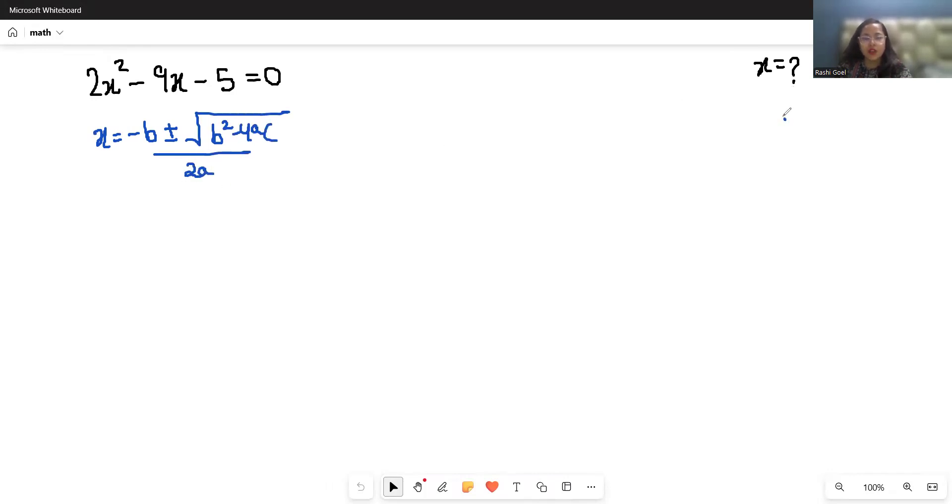Let's find the values of a, b, and c. This is the standard form of a quadratic equation. Comparing our equation 2x² - 9x - 5 = 0, we get a = 2, b = -9 (not positive 9), and c = -5.